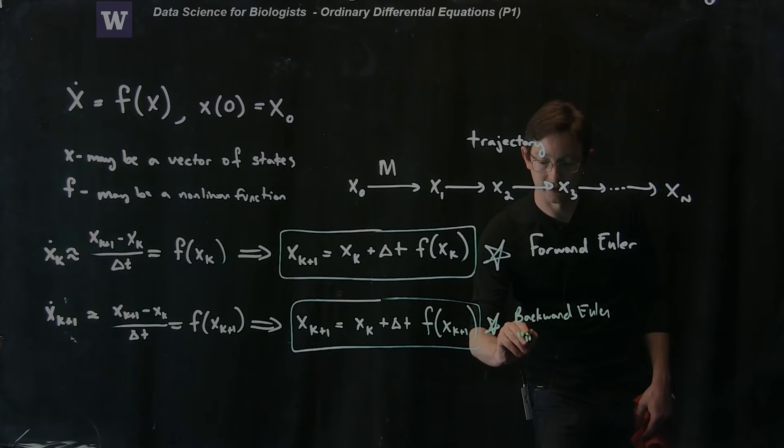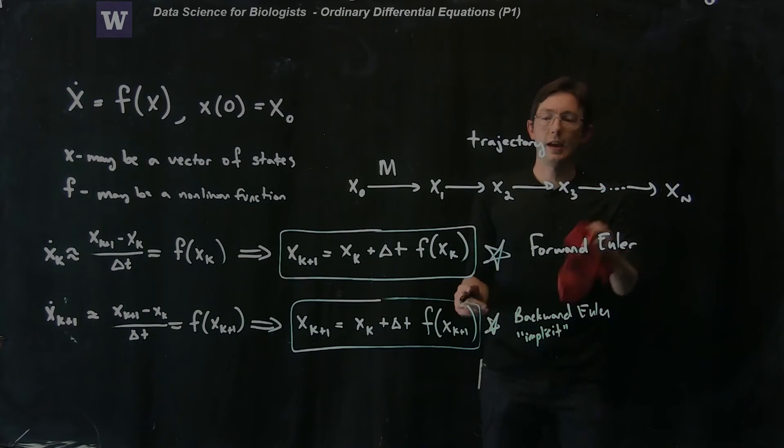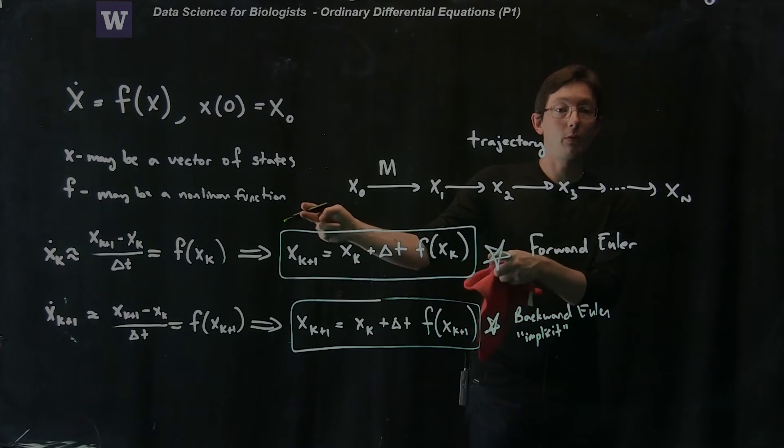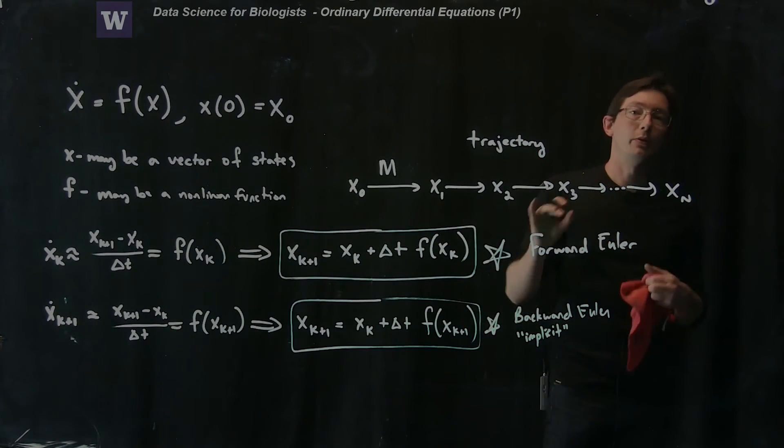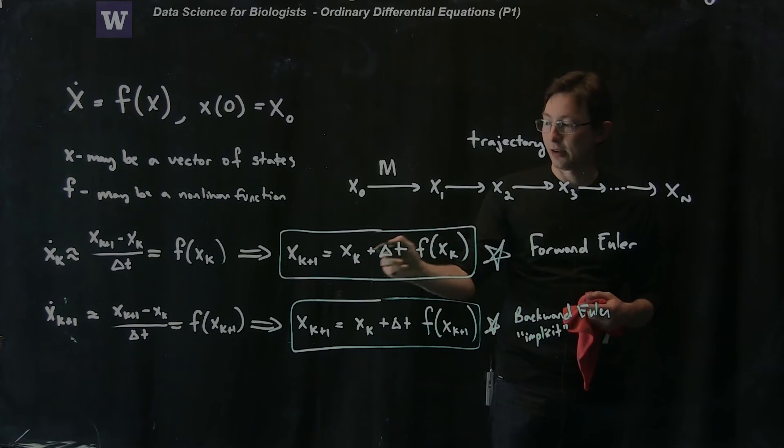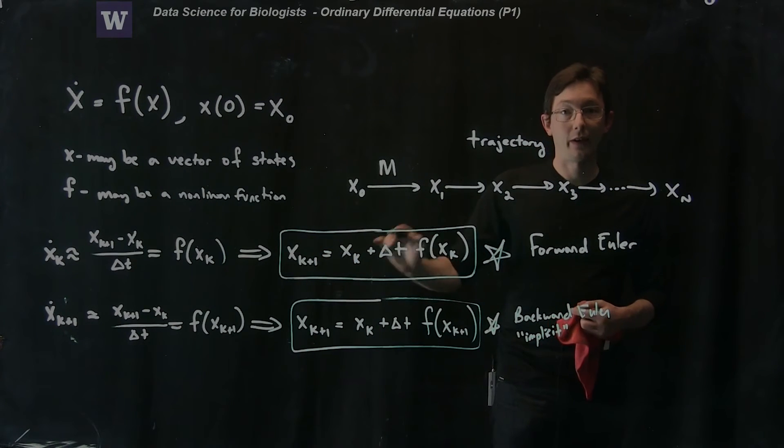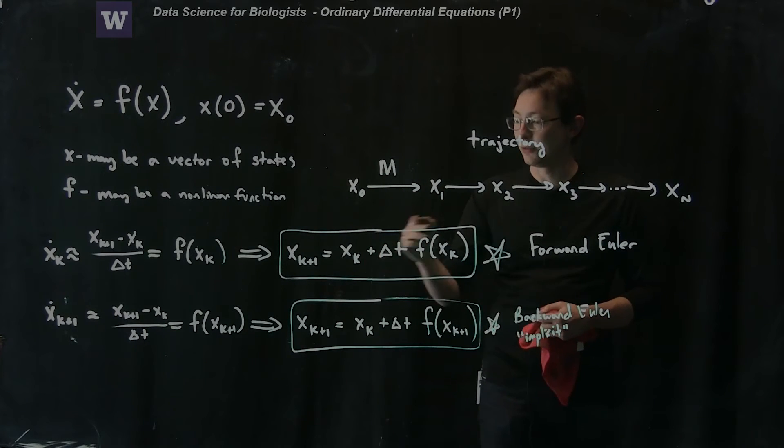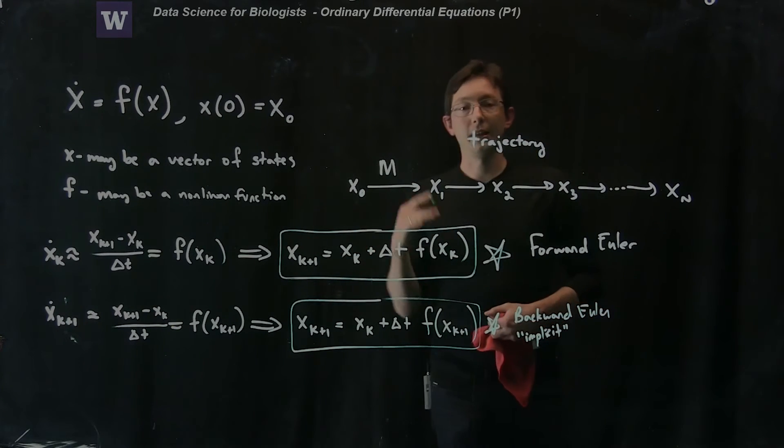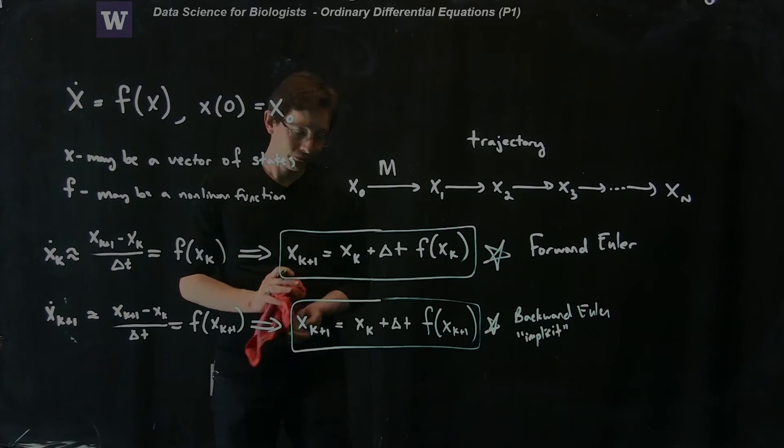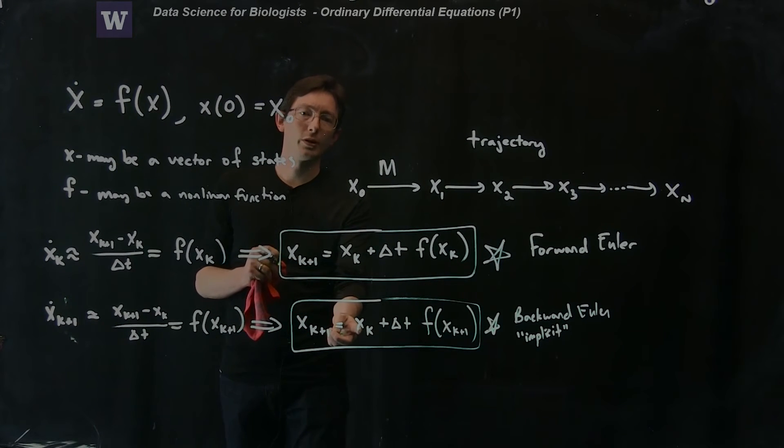And I like to call it implicit, I think this makes more sense. Because notice that in this expression up here in forward Euler, it's a really simple direct algorithm. If you have x naught, you can get x1. If you have x1, you can get x2 and so on. It's just easy to evaluate this right hand side and get the next step in the trajectory.